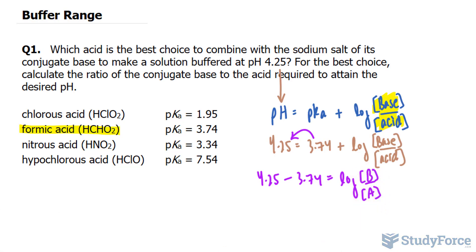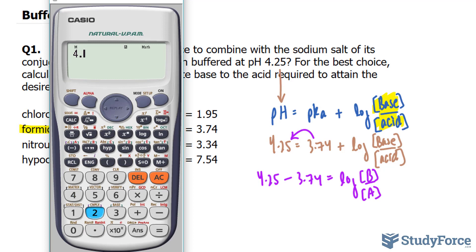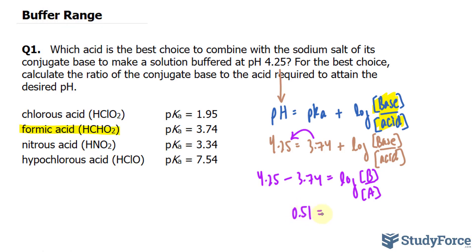And subtracting the numbers on the left, 4.25 minus 3.74 is equal to 0.51. 0.51 is equal to the right side. Now to solve for this ratio, I'll have to raise both sides of these equations as powers to the base 10. The reason why I'm choosing the base 10 is because we have a common log here. Common logs, we don't write the base down, but it's 10.